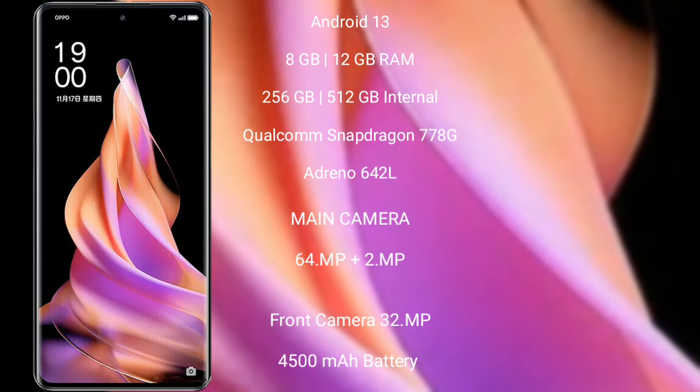OPPO Reno 9 features a rear dual-camera setup with 64MP plus 2MP, and its front camera is 32MP. It has a 4500mAh battery with 67W fast charging support.